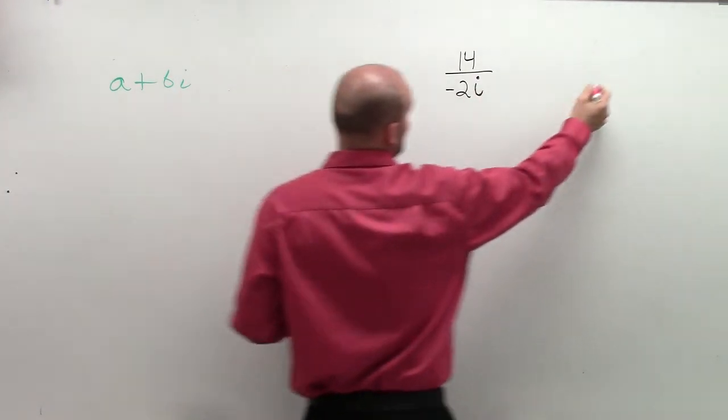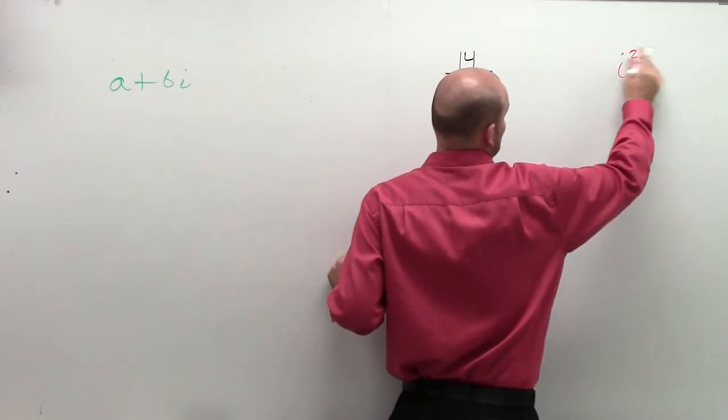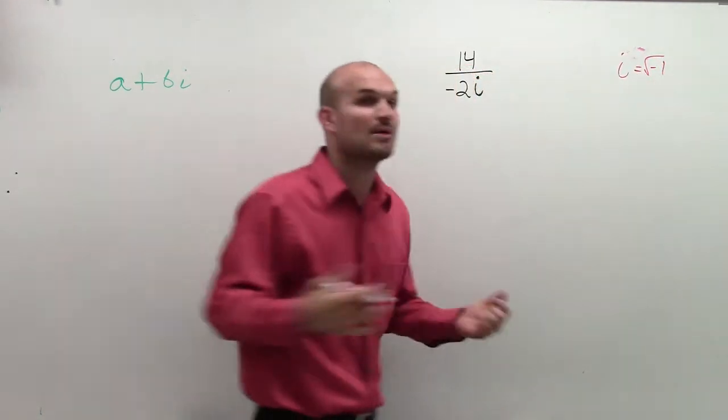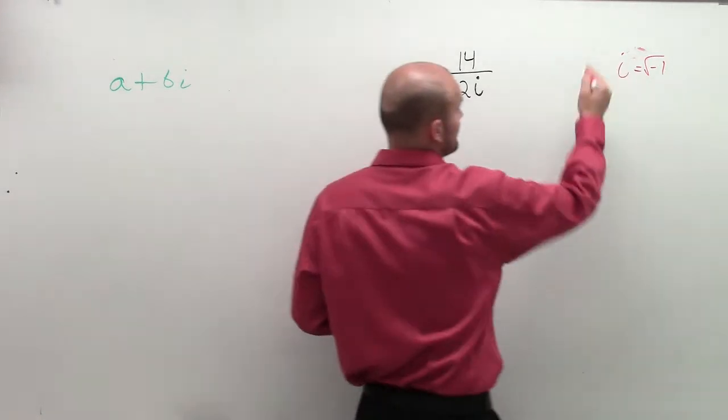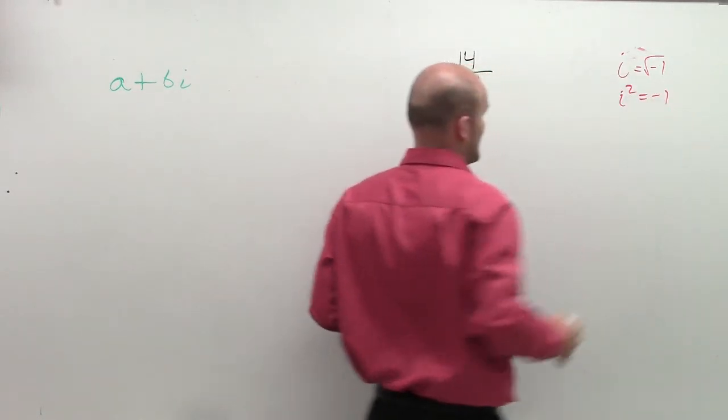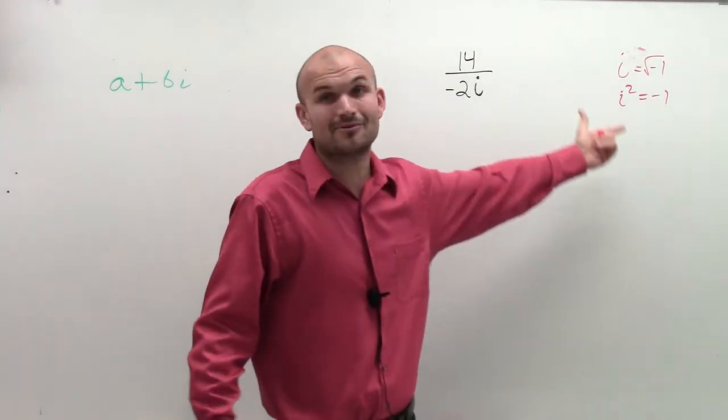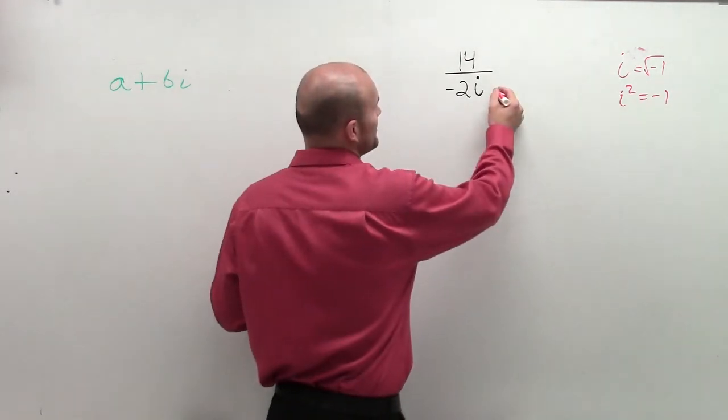Well, a couple things you need to remember, hopefully you do, is we bring i into the system to represent the square root of negative 1. So if I square both sides, I get i squared equals negative 1. So that means if I multiply i by i, I get rid of i, it becomes negative 1. So that's what I'm going to do.